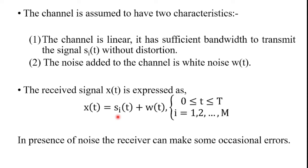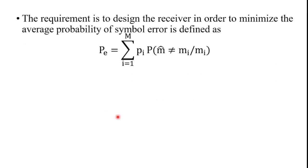In the presence of noise, the receiver can make occasional errors. The requirement is to design the receiver to minimize the average probability of symbol error, defined as: Pe equals the sum from i equal to 1 to M of pi times P(m-cap not equal to mi), where m-cap is the estimate and mi is the message symbol.